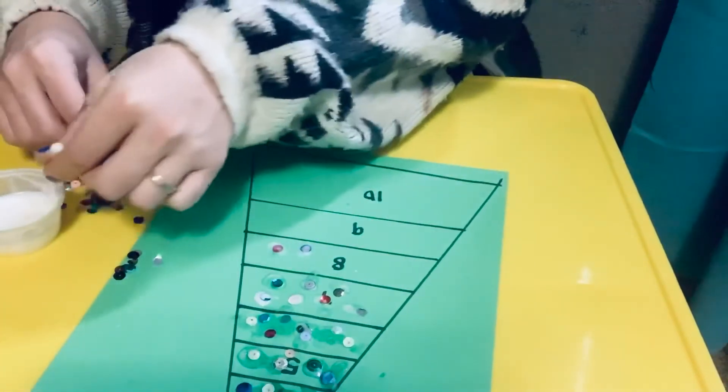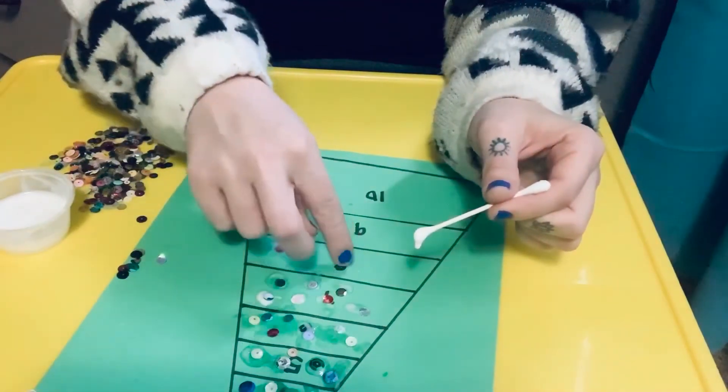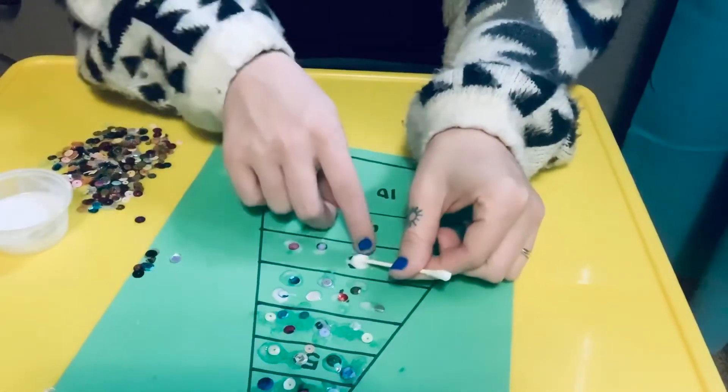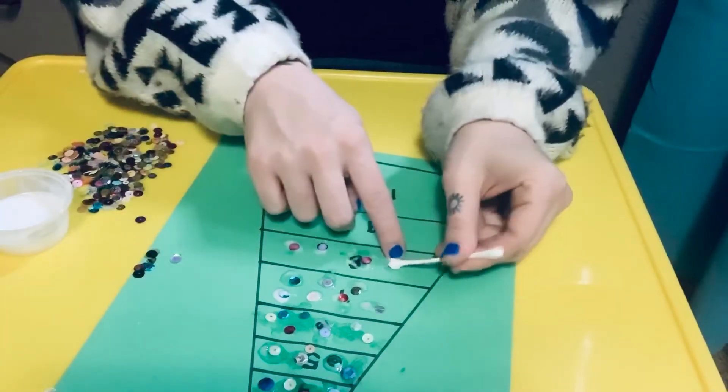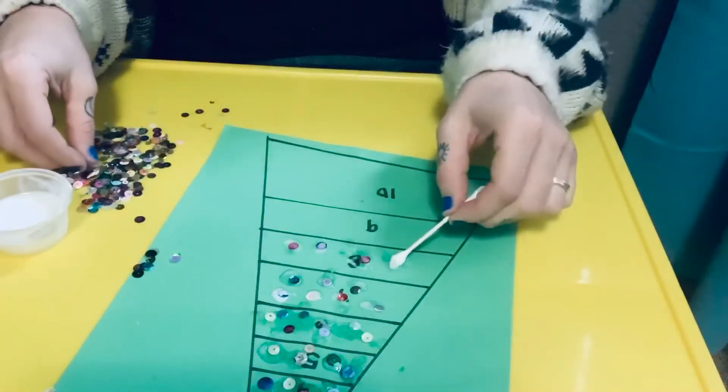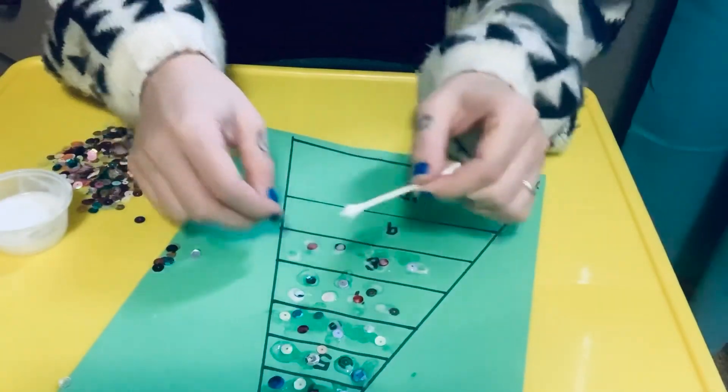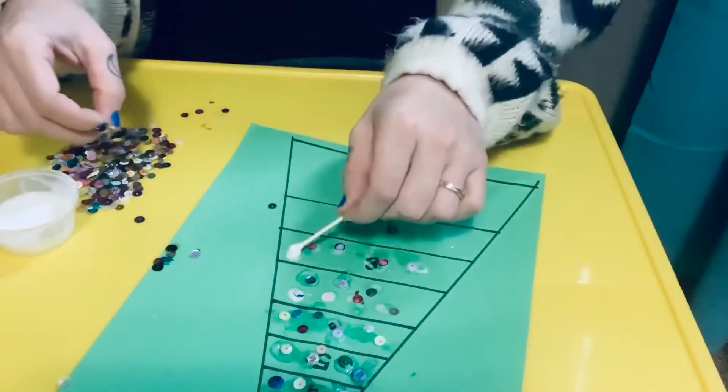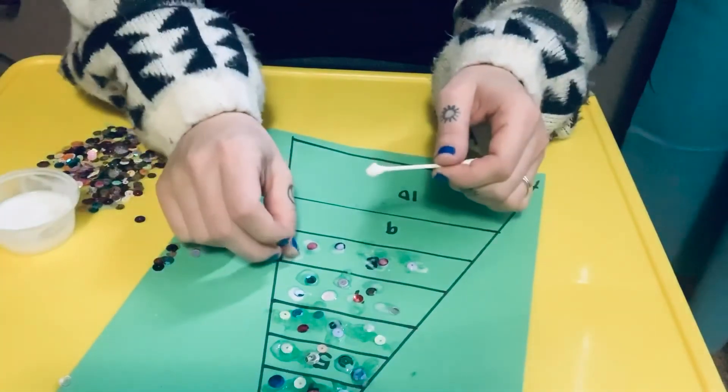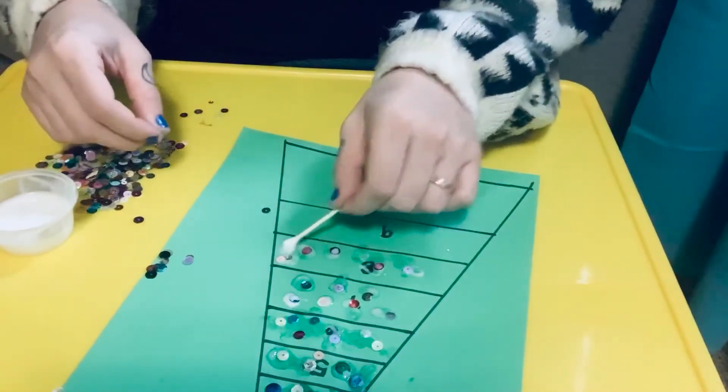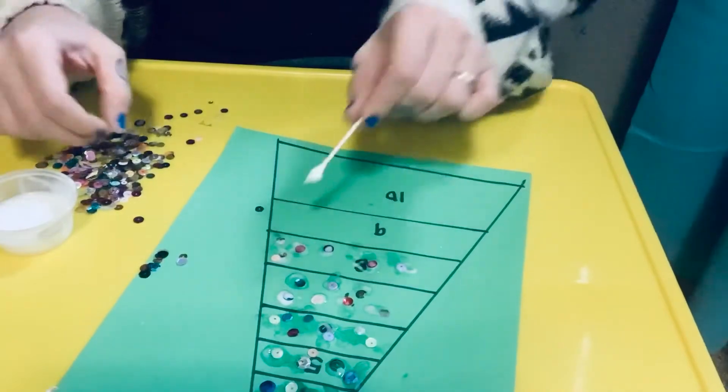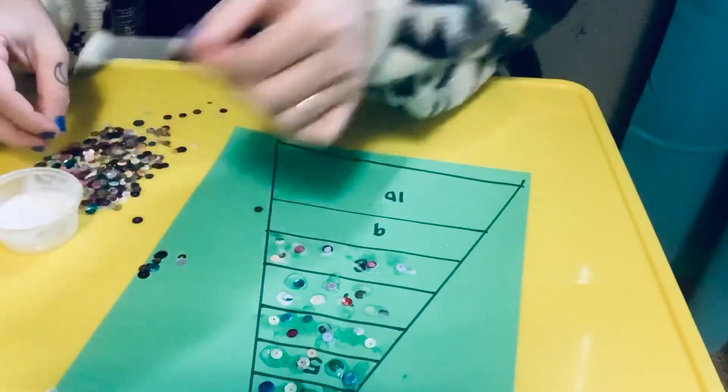One, two, three, four, five, six, and eight. It's really good to have a paper towel handy. Sequins are sticking to my fingers. So if you don't want them to stick to your fingers, I would recommend having a paper towel. One, two, three, four, five, six, seven, eight.